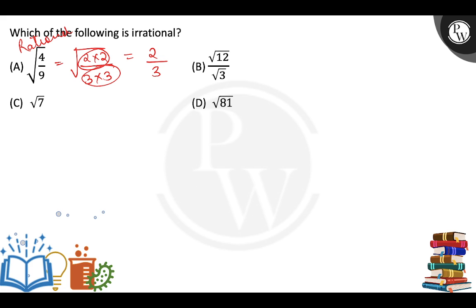After this, let's go to option number B. What is the option number B? We can write root 12 as 2 into 2 into 3. So this is the pair of 2. 2 root 3 by root 3. Root 3 and root 3 cancel. 2 is how is it? The rational number.